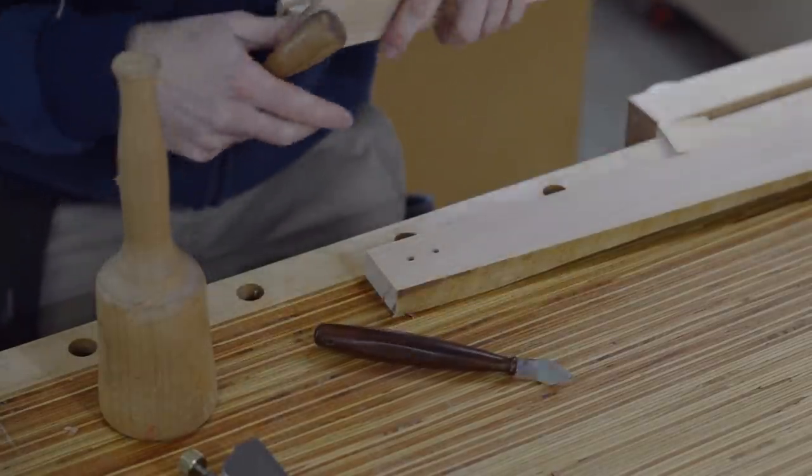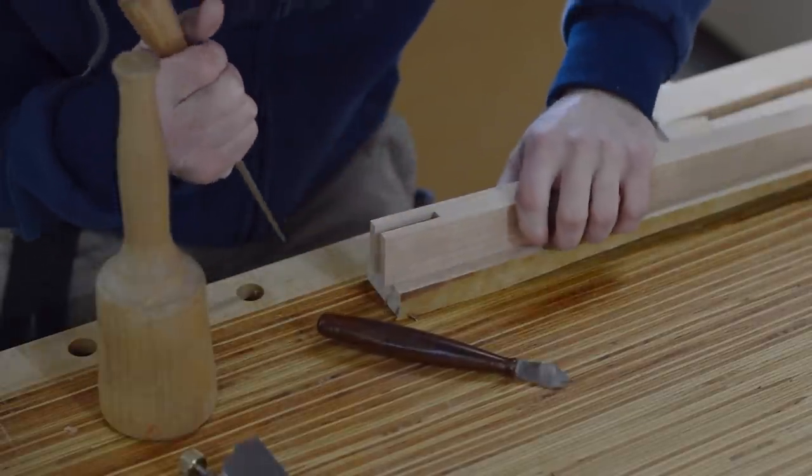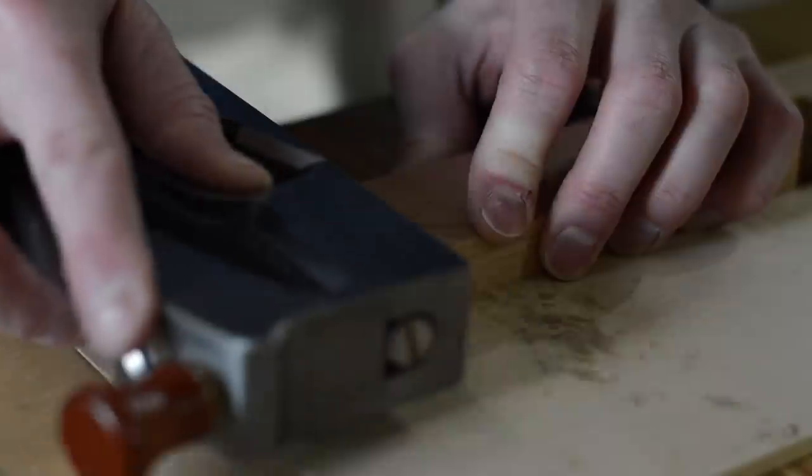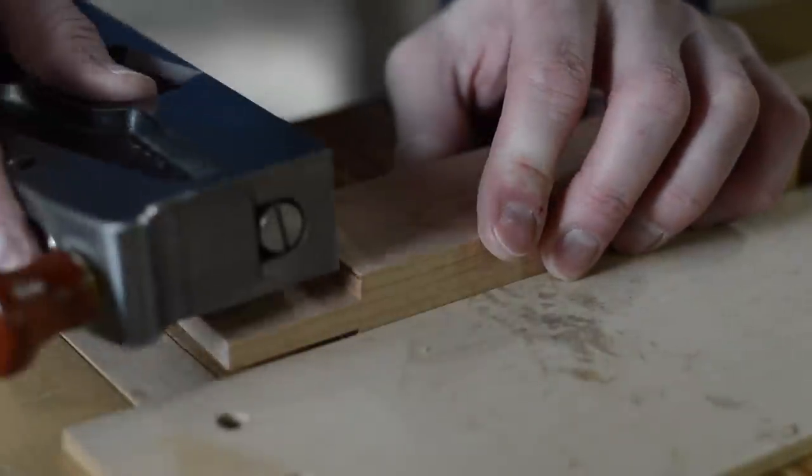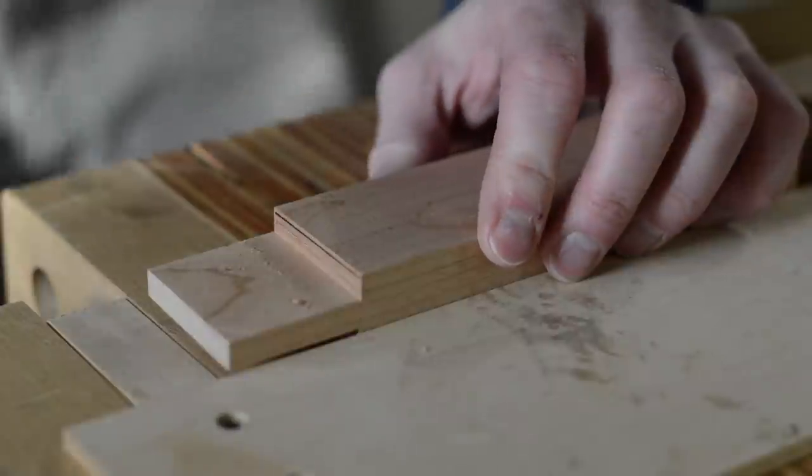Because I'm using a table saw blade with an alternate top bevel, I get small peaks and valleys in my joinery cuts, so I like to come back with a chisel and a hand plane and clean those up.